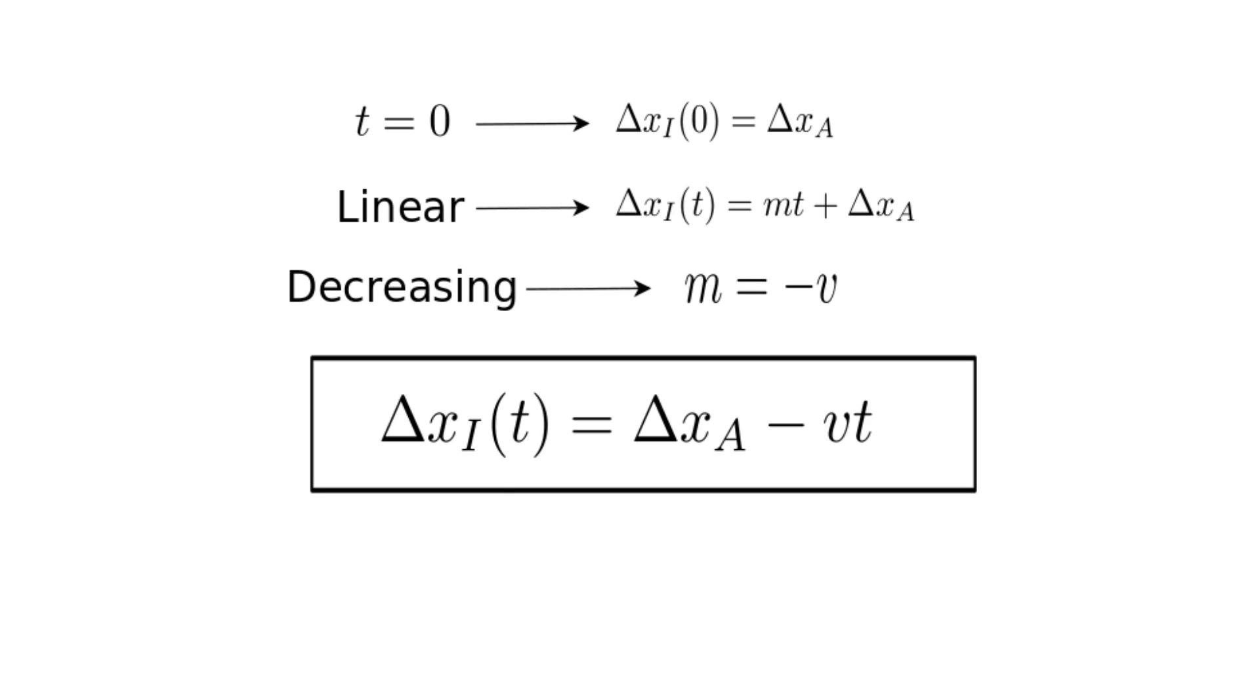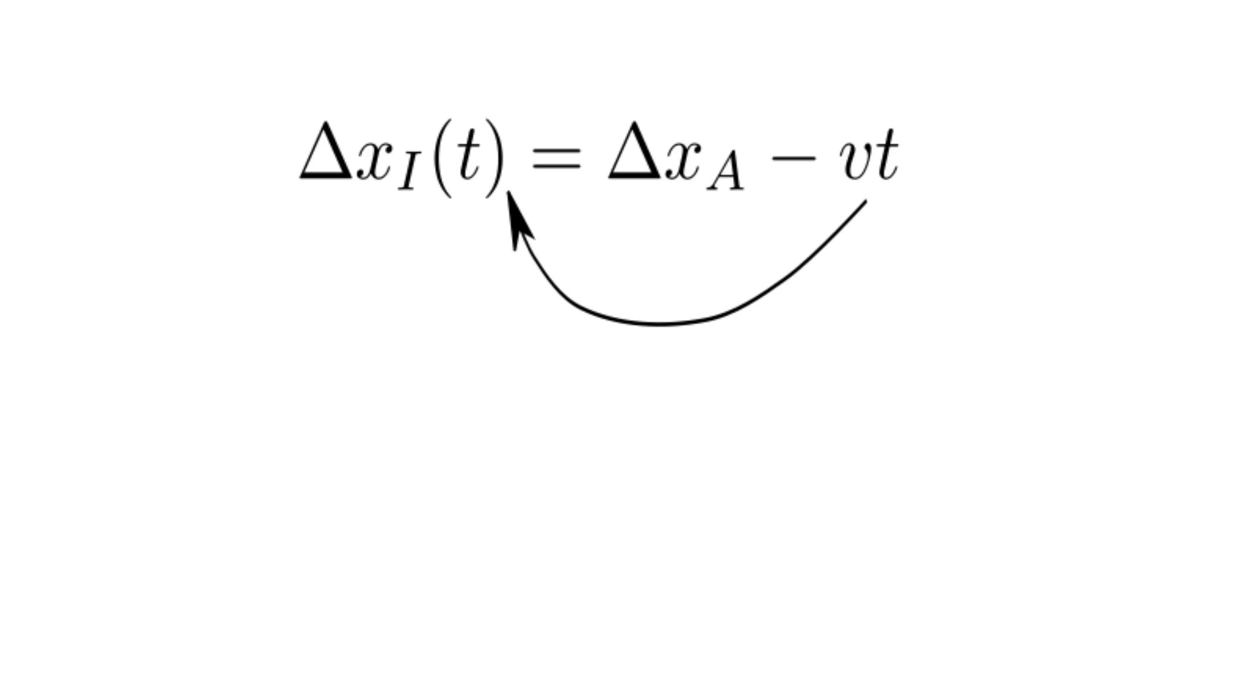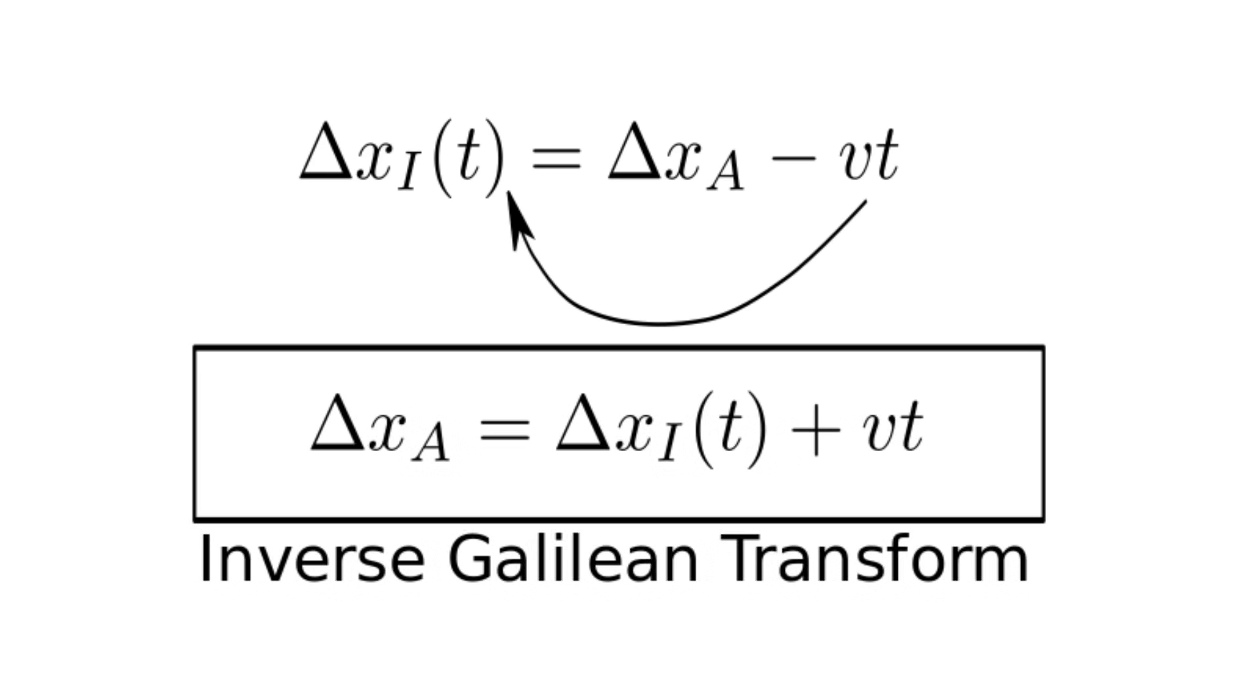This result is known as a Galilean transform, and it relates the different experiences of Isaac and Albert just like we wanted. We can also solve for delta xa and get the inverse Galilean transform, delta xa is equal to delta xi plus v times t. What else do these equations say?